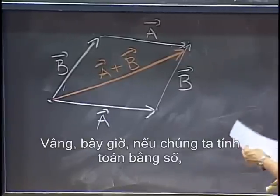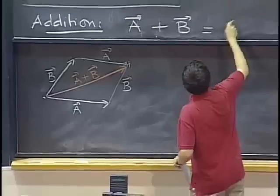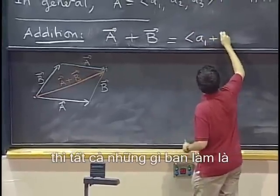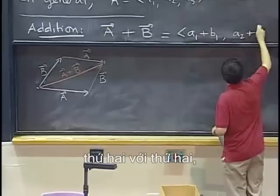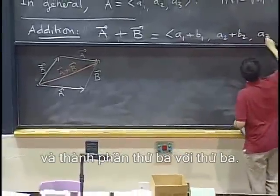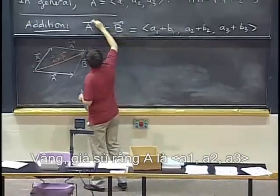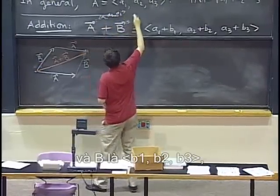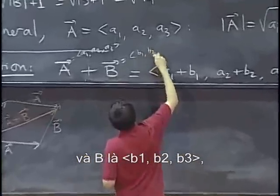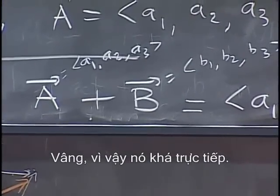OK? Now, if we do it numerically, then all you do is you just add the first component of a with the first component of b, the second with the second, and the third with the third. OK, say that a was a1, a2, a3, b was b1, b2, b3, then you just add this way. OK, so it's pretty straightforward.